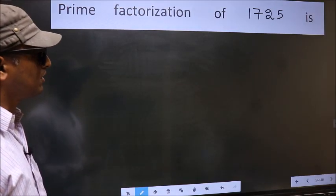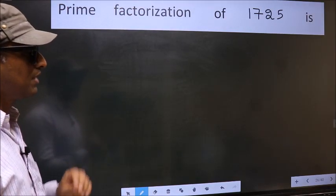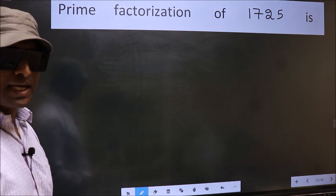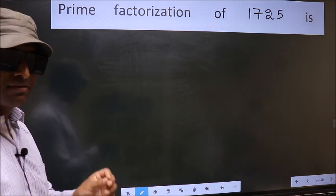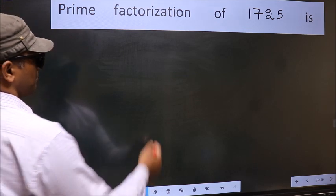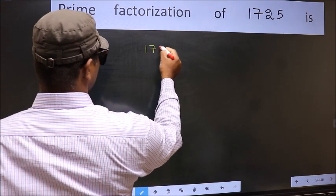Prime factorization of 1725. To do prime factorization, first we should frame it in this way: 1725.